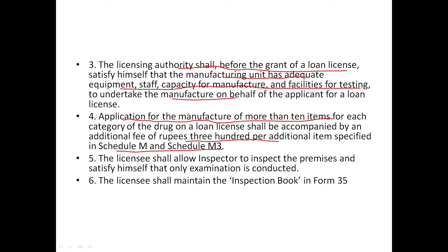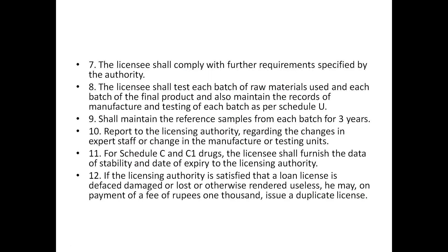The licensee must allow the inspector to inspect. The licensee must maintain the inspection book. The licensee shall comply with further requirements specified by the authority. The licensee must understand each batch of raw material and maintain the final product records. Records must be maintained and stored properly according to the schedule.